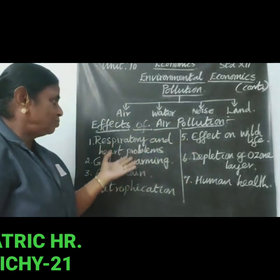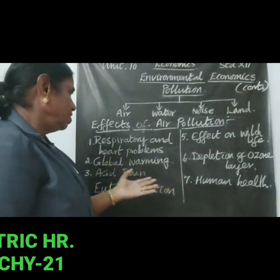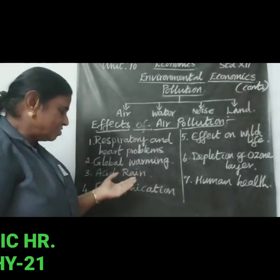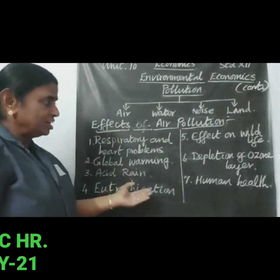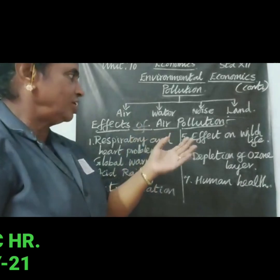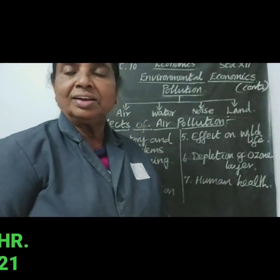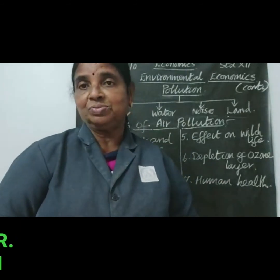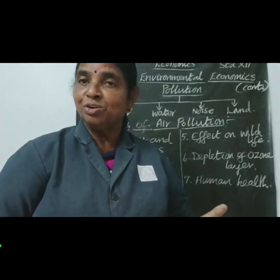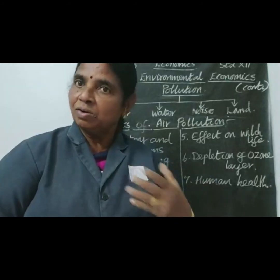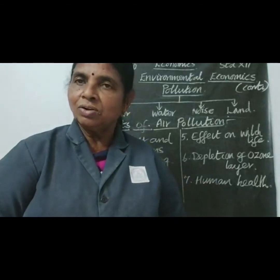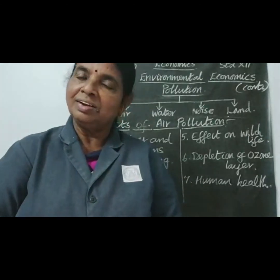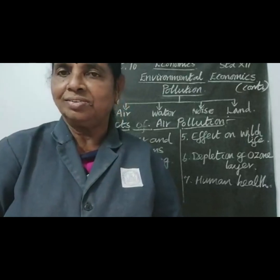In summary, the effects of air pollution include respiratory and heart problems, global warming, acid rain, eutrophication, effect on wildlife, depletion of the ozone layer, and impact on human health leading to premature deaths on a large scale. We will learn about water pollution in the next class. Thank you for listening.